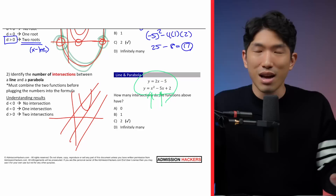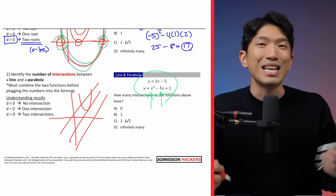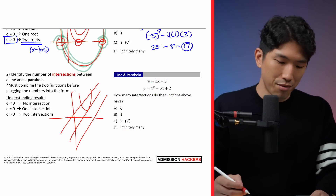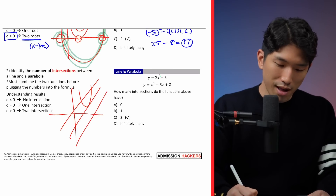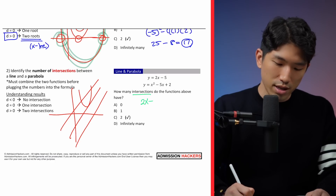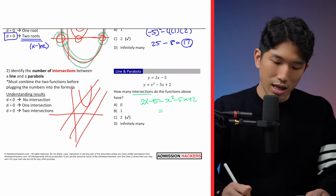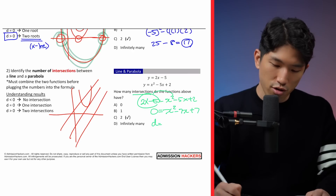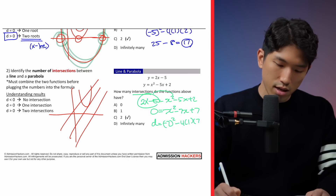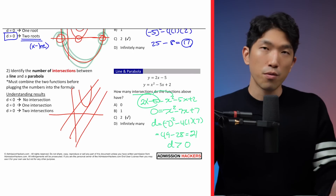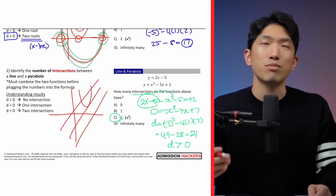If it simply came down to plugging into the calculator, it wouldn't be fair for people without graphing calculators. The SAT is a standardized exam — it's the same for everybody. So let's talk about how discriminant works for a line and a parabola. We have a linear equation (first power) and a parabola (second power). The first step is to set the equations equal to each other: 2x minus 5 equals x squared minus 5x plus 2. Then combine everything to one side: x squared minus 7x plus 7 equals 0. Pop it into discriminant: minus 7 squared minus 4 times 1 times 7, which is 49 minus 28 equals 21. Because the discriminant is greater than 0, there are two intersections, so the answer is choice C.